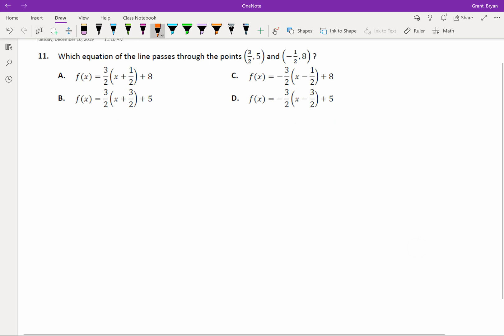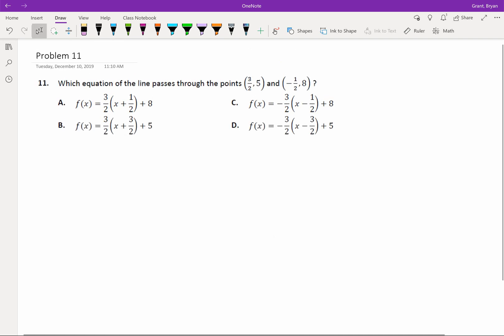Which equation of the line passes through these two given points? Well before we even do any math here we should probably figure out what form all these equations are in, and to me it looks like all of these equations are in the hk form, m times x minus h plus k.